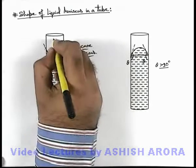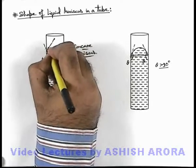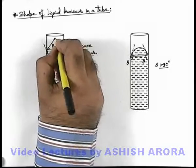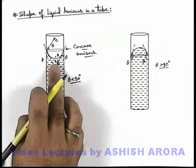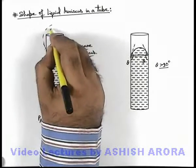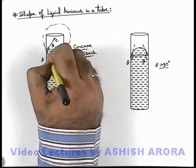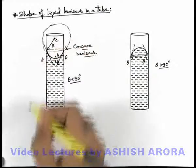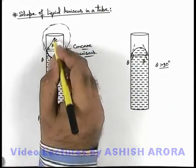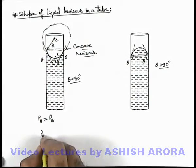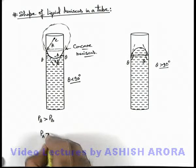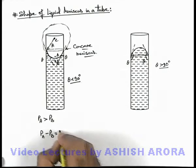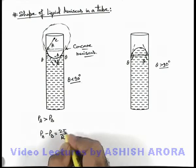And if r is the radius of curvature for this meniscus, if this is the point we consider as center of curvature of the meniscus, or if we consider this meniscus to be a spherical section like this, we can say pressure at point A is higher than that of B. And p_a minus p_b here we can write as 2T by r if T is the surface tension.